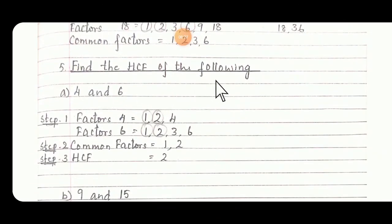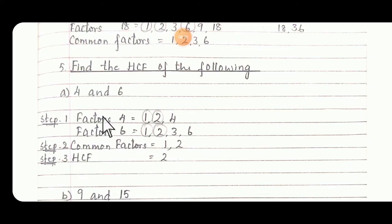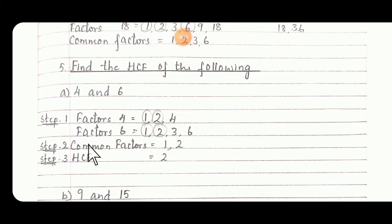Find the HCF of the following. A: 4 and 6. Step 1 we need to find factors, step 2 common factors, and at the last we are going to have HCF. To have HCF first we should find factors, then common factors. Factors of 4 are 1, 2, and 4. Factors of 6 are 1, 2, 3, and 6. Then common factors are 1 and 2.